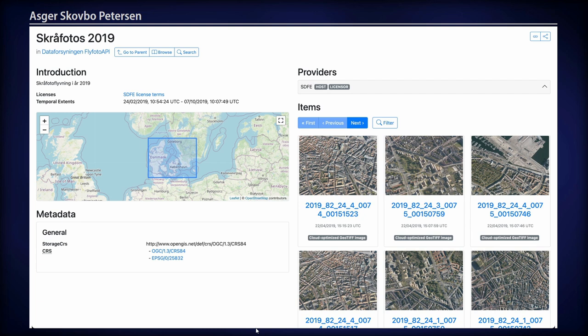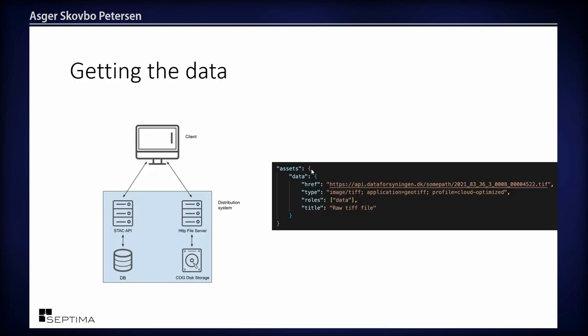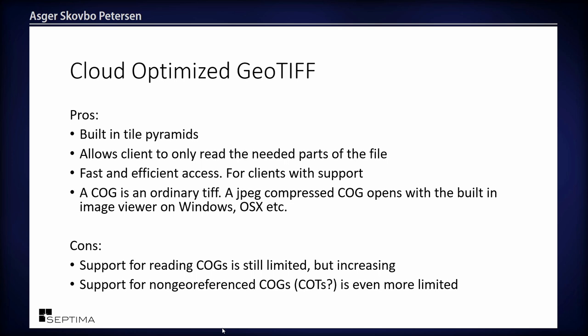Once you get the metadata from the STAC API, your client can go to the HTTP server and fetch just the part of the Cloud-Optimized GeoTIFF it needs. COGs are nice because they have built-in tile pyramids and are structured so that the client only reads the required part of the file — giving fast and efficient access for clients that support dynamic COG reading. Also, a COG is an ordinary TIFF, so a window cleaner can download it, open it in Windows Paint, and make markings — it works like any other TIFF.